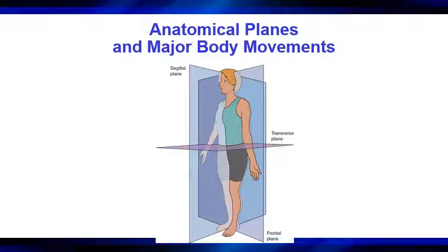Elbow flexion, shoulder flexion — bringing your arms straight up overhead — hip flexion, knee flexion, hip extension, knee extension. Those are all movements that occur through the sagittal plane.